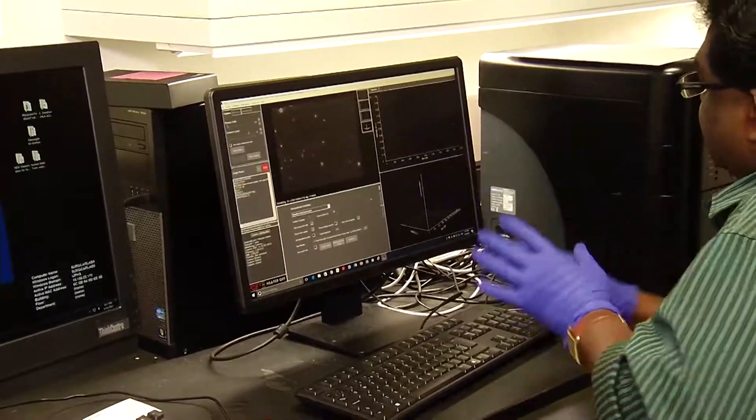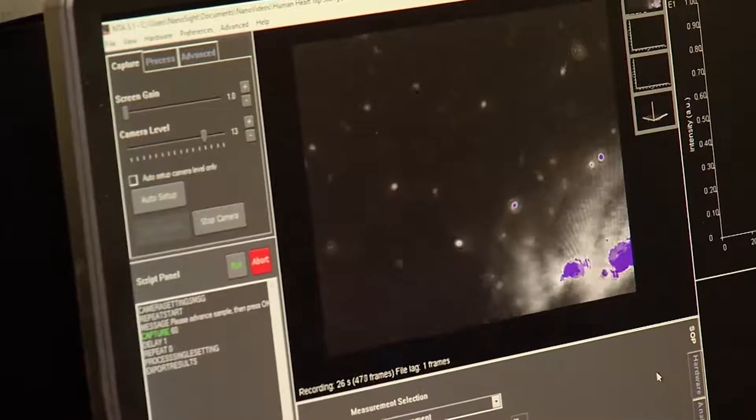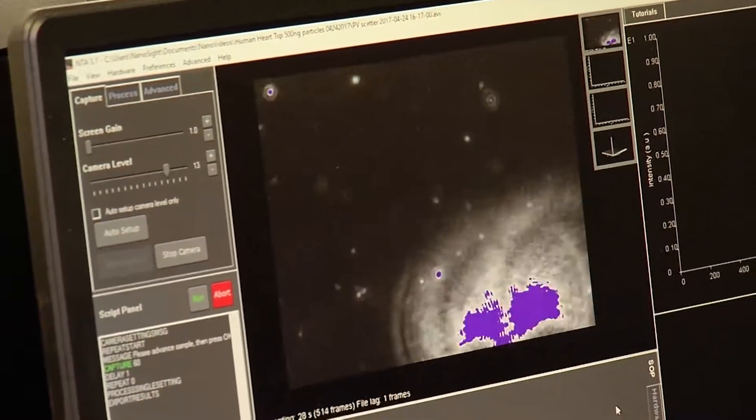It turns out these exosomes can be picked up that are released by these transplanted organs. And more importantly, their profiles seem to change very early on in the rejection process, which for us is very critical.